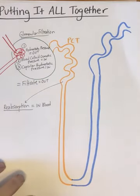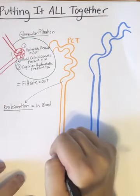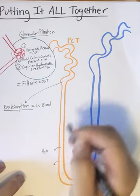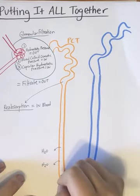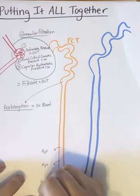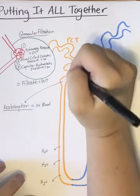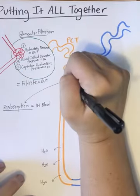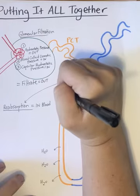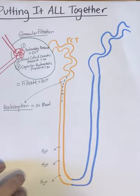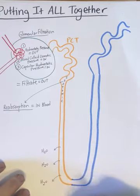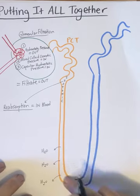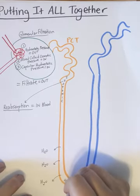As far as the loop of Henle goes, we learned that water is reabsorbed on the descending limb of the loop of Henle. After reabsorption in the proximal convoluted tubule, the fluid inside the nephron is isotonic. As water is pulled out, the fluid in the nephron becomes hypertonic.